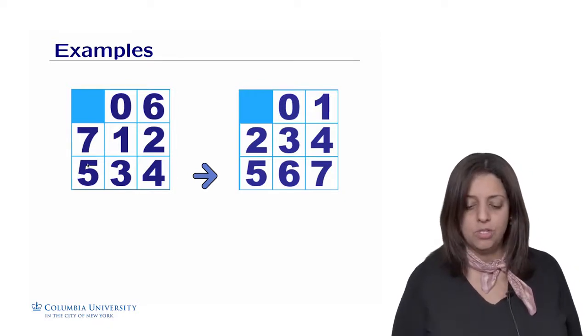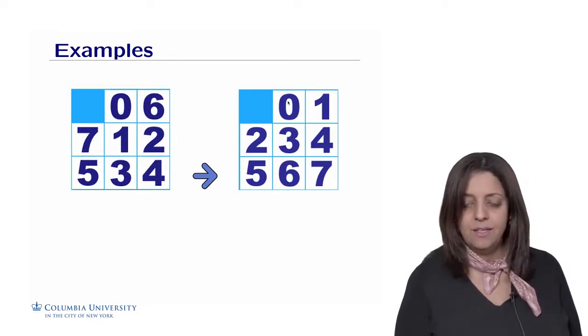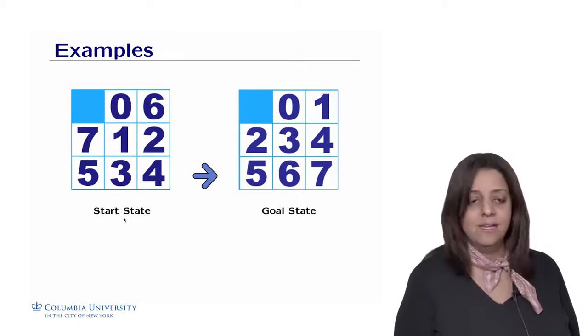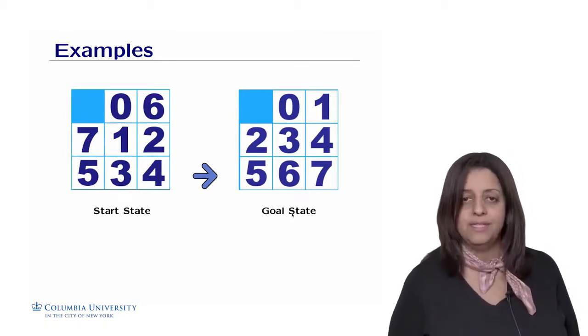Which is the numbers ordered from 0 to 7, starting from this middle top square. So this could be a possible start state, and this could be a possible goal state.